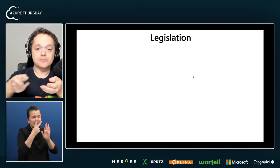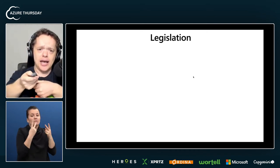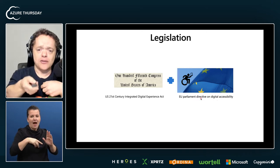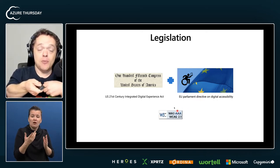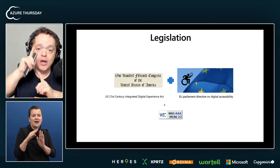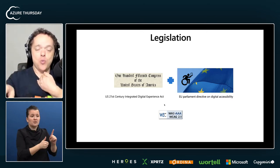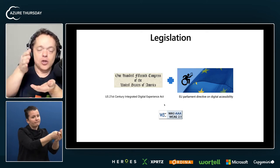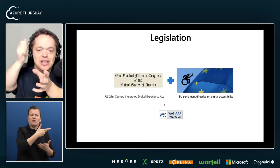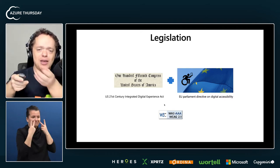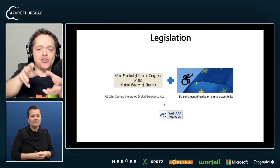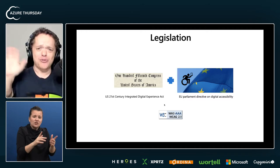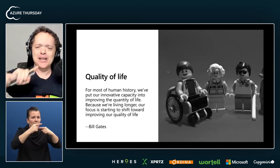Now let's define motivators. First of all, the stick: legislation. We have the U.S. 21st Century Integrated Digital Experience Act and the EU Parliament Directive on Digital Accessibility, which says if you're not WCAG 2.1 AA compliant, like Canada, you will get a $100,000 fine per day for civil-facing websites. At Microsoft we want to get ahead of the curve — everything we do is accessible. We see that the same thing is going to happen with legislation as happened with GDPR, where everything got pop-ups and passwords and browsing became impossible.